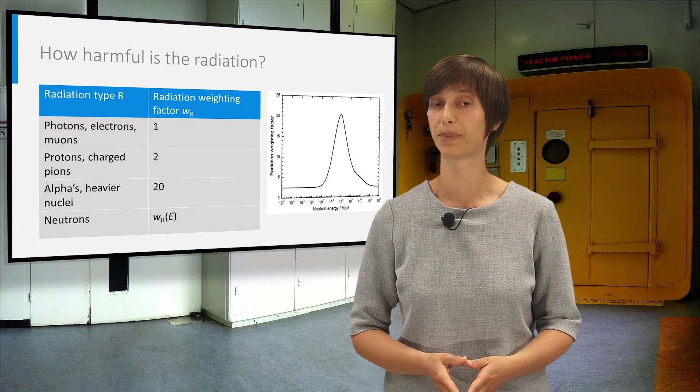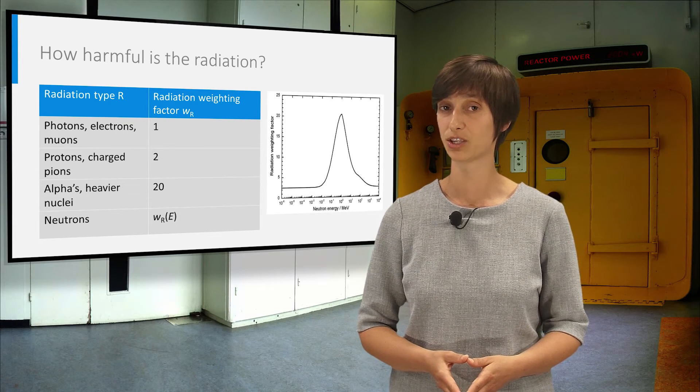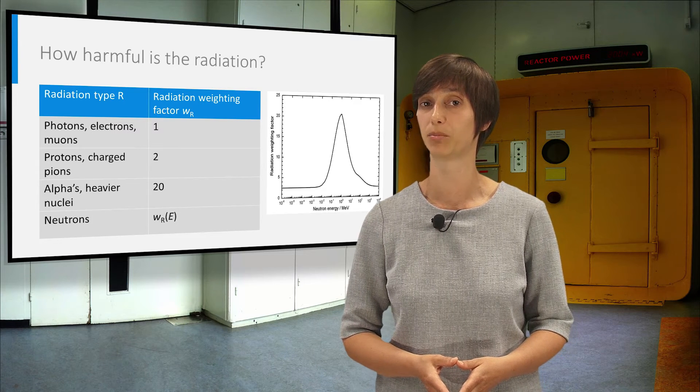For neutrons, the weighing factor depends on the energy, as shown in the plot on the right, and ranges about 2.5 up to slightly above 20.